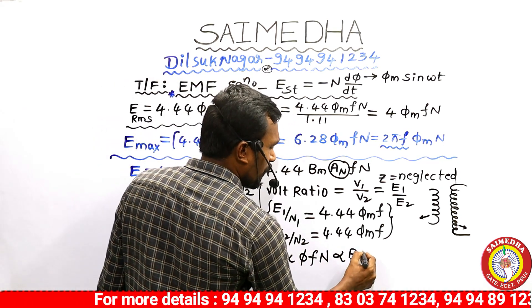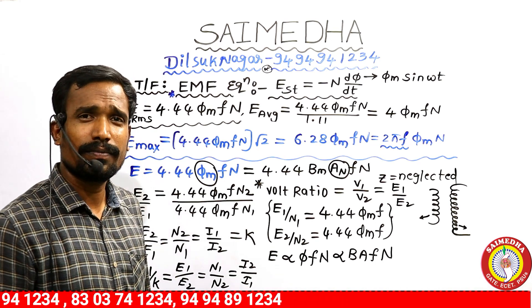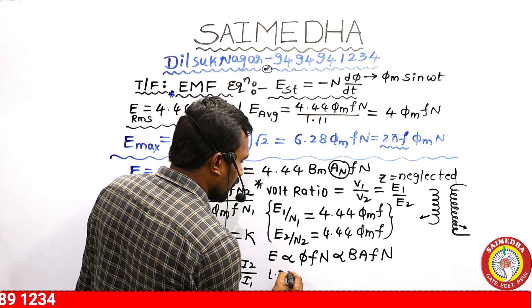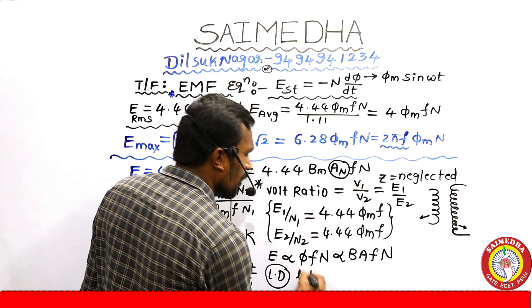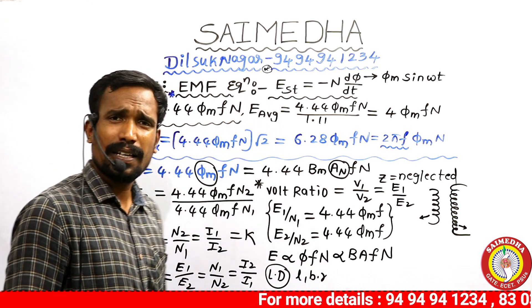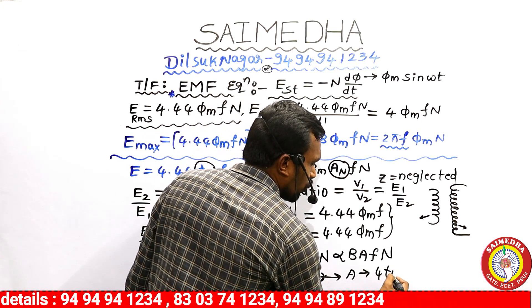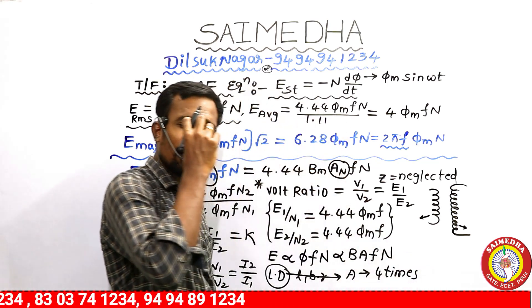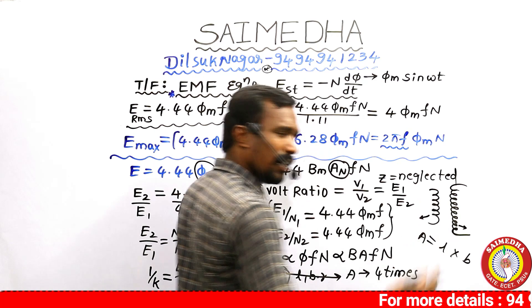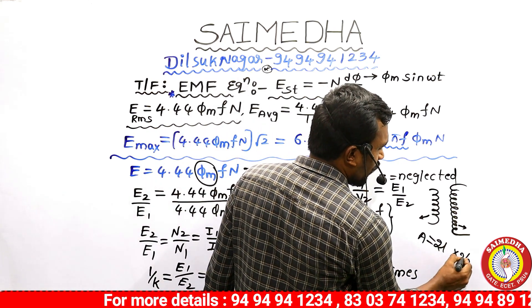The EMF equation depends on flux density, area, frequency, and number of turns. Now, a key concept: if linear dimensions — length, width, radius — are doubled, then the area becomes 4 times, because area = length × width. If length doubles and width doubles, that gives 2 × 2 = 4 times the original area.